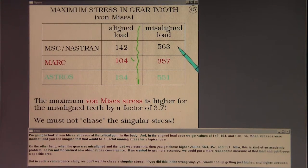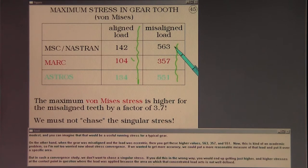On the other hand, when the gear was misaligned and the load was eccentric, then you get these higher values: 563, 357, and 551.